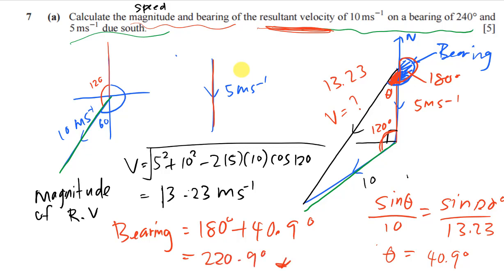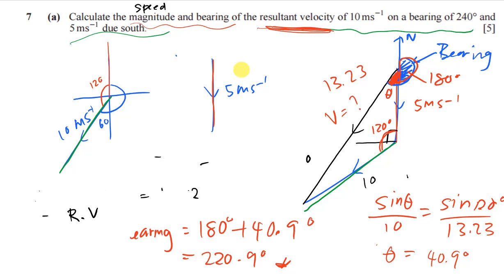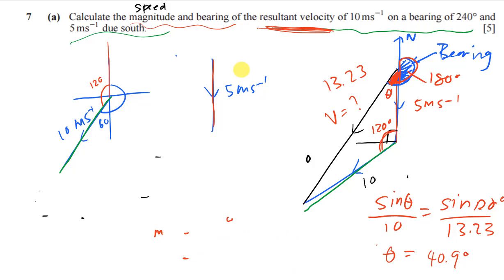I checked the marking scheme and both forms of the answer are acceptable. Some students worry if they form a different triangle - but as long as you use the correct vector method, no matter how you form the triangle, the answer should always be the same. The method is always to use the cosine rule first, then the sine rule.